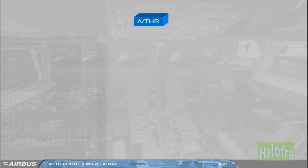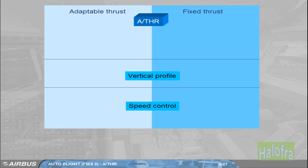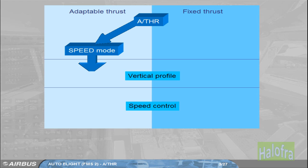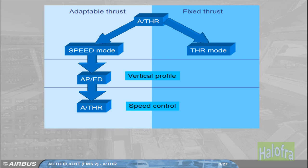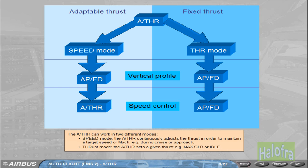The Autothrust can work in two different modes. Speed mode: the Autothrust continuously adjusts the thrust in order to maintain a target speed or Mach, e.g. during cruise or approach. Thrust mode: the Autothrust sets a given thrust, e.g. Max Climb or Idle.